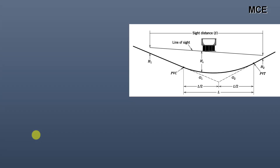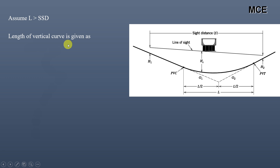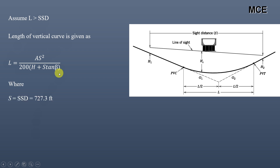After finding the SSD, we will now find the length of the sag vertical curve to satisfy the stopping sight distance at night time. We assume either the length of the curve is greater than SSD or smaller than SSD, and accordingly use the AASHTO formula. When we assume that the length of curve is greater than the SSD, L equals A times S squared divided by 200 times (H plus S times tan(beta)), where S is the SSD of 727.3 feet.